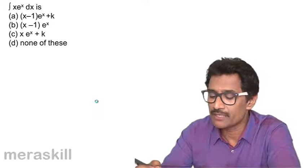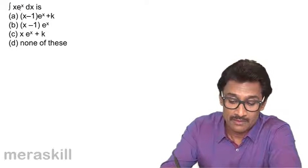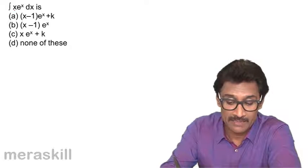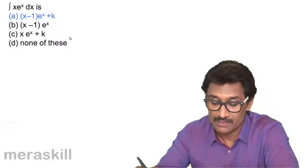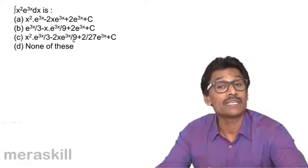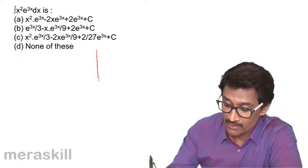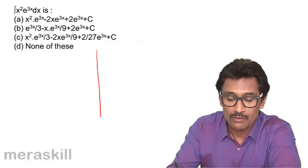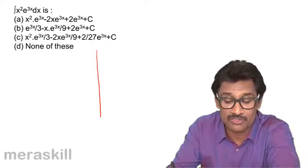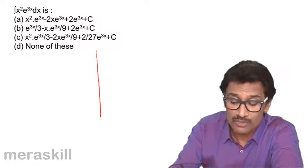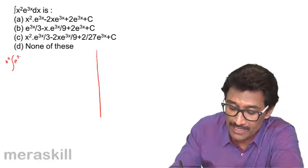We already did ∫x·e^x dx earlier, taking the algebraic function as u and the exponential as v. Now we have ∫x²·e^(3x) dx, which is a little longer. Among the two functions, e^(3x) is taken as the actual exponential function (v), and x² is taken as the algebraic function (u).